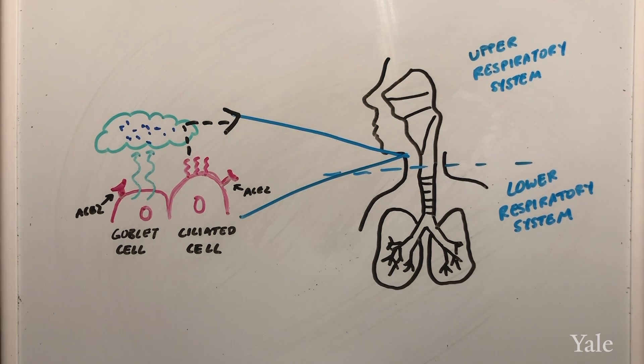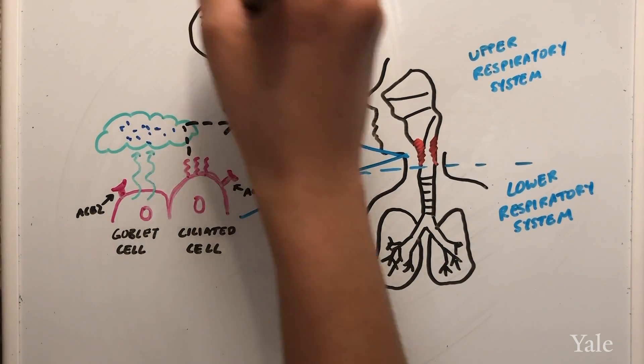When the virus attacks goblet and ciliated cells, this causes inflammation and irritation in the airways that will stimulate dry coughs.